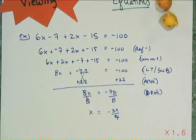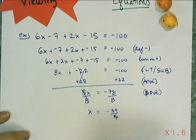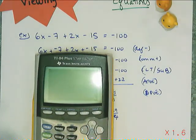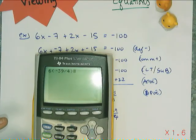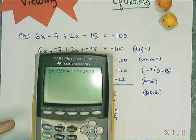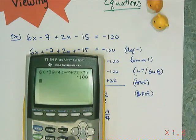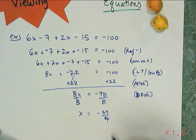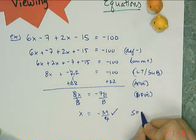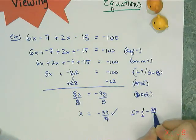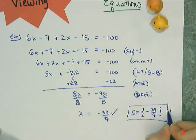The 8s cancel and I get negative 78 over 8, which simplifies to negative 39 over 4. I want to check: 6 times (negative 39/4) minus 7 plus 2 times (negative 39/4) minus 15 should equal negative 100. And it does — so my solution is negative 39 fourths.